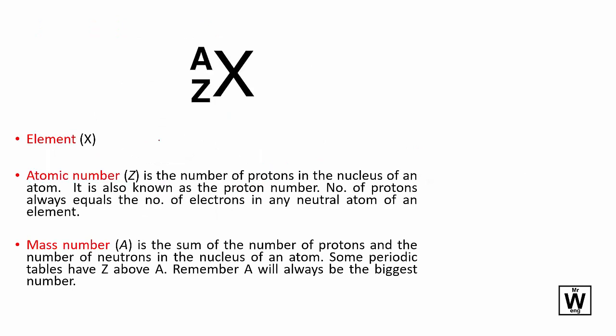Using symbols, we have the element represented as X. The larger number is always the mass number, which is represented by A. The smaller number, Z, is the proton number.